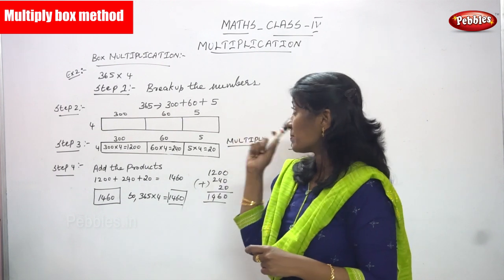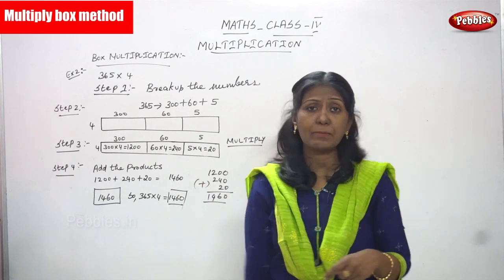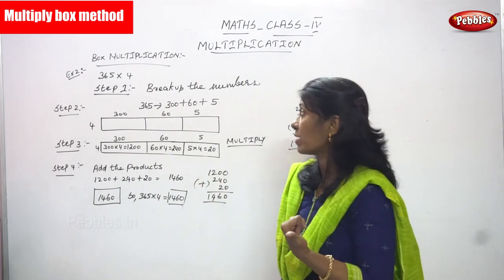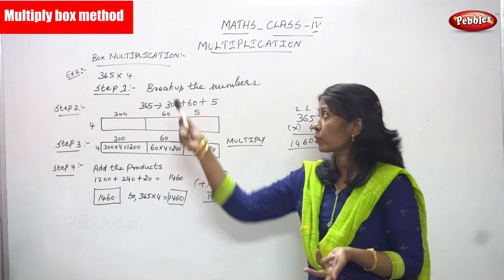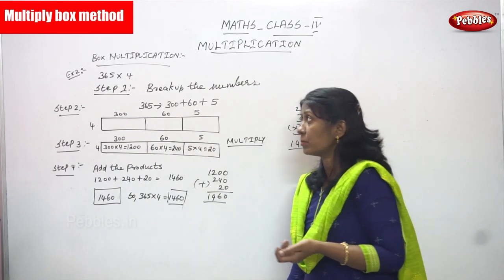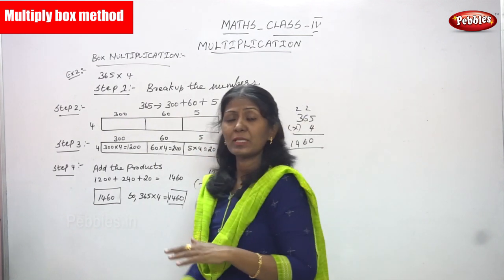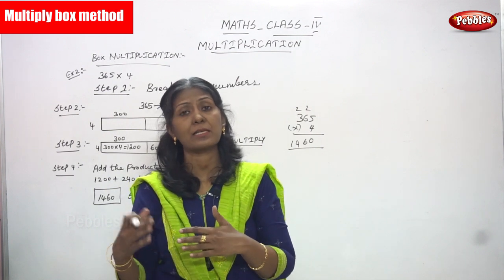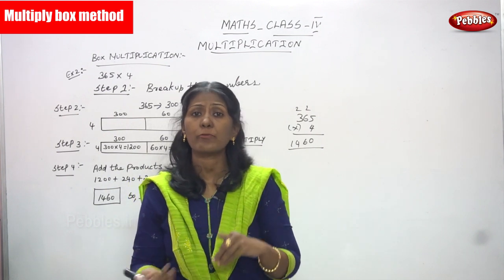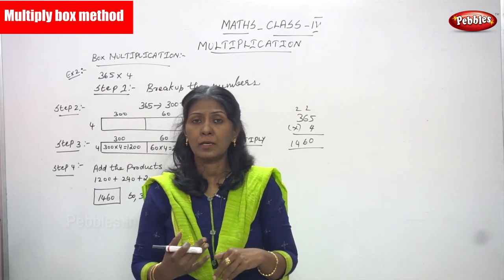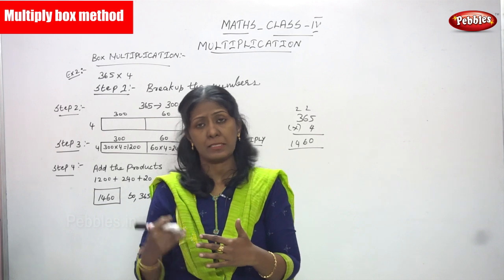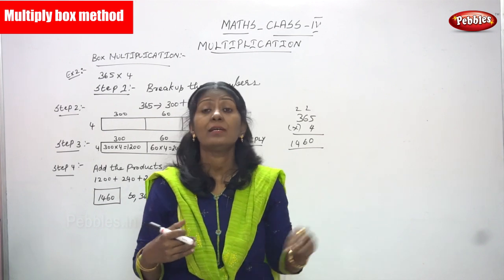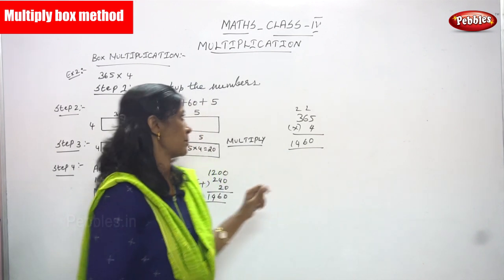Now we are going to see box multiplication example two. First we have done the two-digit number, now we are going to do a three-digit number. If the number or the digit is a little big, you have to use box multiplication to cut it short. Let's start the sum.